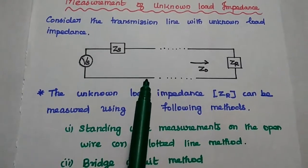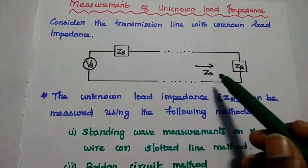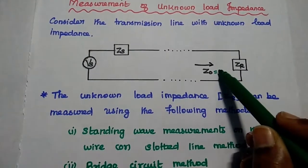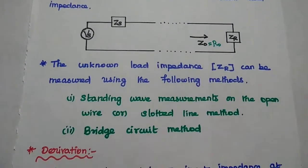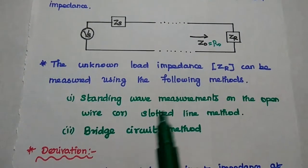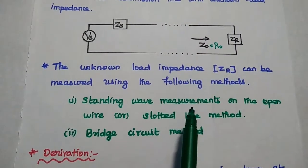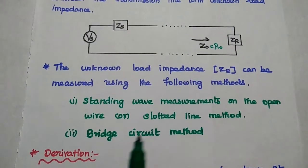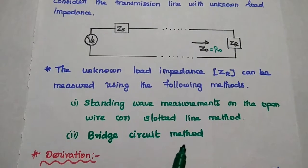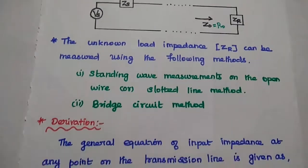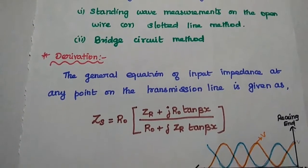Here we can consider the dissipationless line — that means zero dissipation line — for which the characteristic impedance is purely resistive. The unknown load impedance ZR can be measured using the following methods: the standing wave measurement method on the open wire or slotted line method, and the bridge circuit method. Now we are going to derive the expression for this unknown load impedance using the standing wave method.